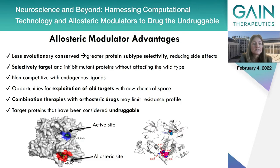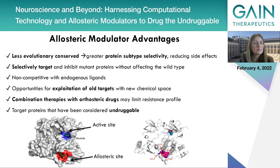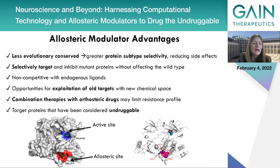There are numerous advantages to designing and applying allosteric modulators. Allosteric binding sites are less evolutionarily conserved, which can lead to greater protein substrate selectivity, reducing side effects. We can selectively target and inhibit mutant proteins without affecting the wild type. Allosteric inhibitors are non-competitive with endogenous ligands, which may lead to up to a thousand-fold increase in in vivo efficacy. We have opportunities to exploit known targets with new chemical space, combination therapies with orthosteric drugs may limit resistance profiles, and we can now target proteins previously considered undruggable by discovering new binding pockets — the second secret of life.